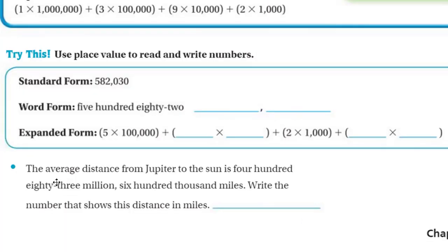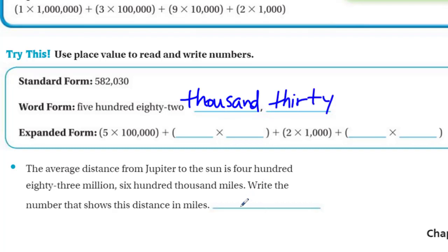Now we have Try This. Use place value to read and write numbers. We have a standard form: five hundred eighty-two thousand, thirty. Now we write the word form: five hundred eighty-two thousand — we need to get the word 'thousand' in there — and then thirty. We don't write anything for that hundreds place because there's just nothing in there.